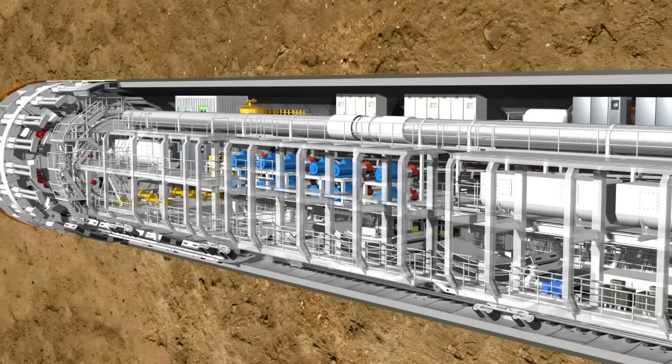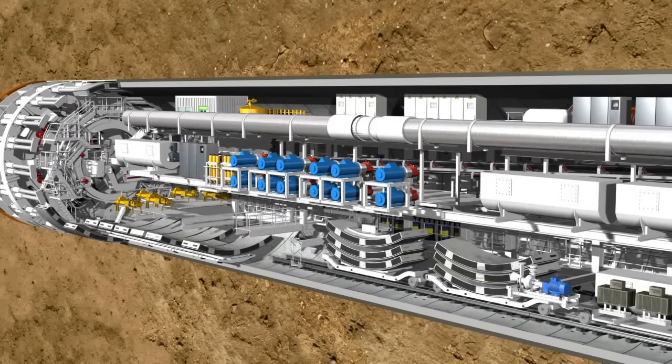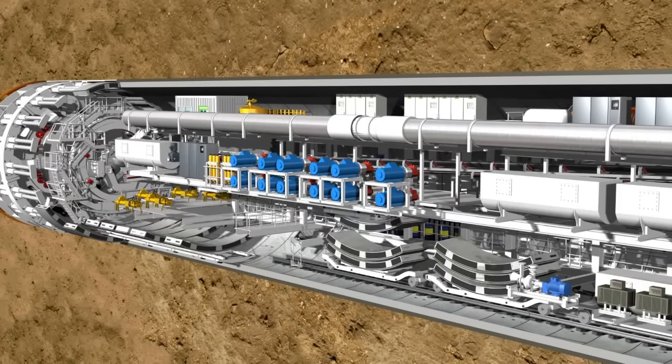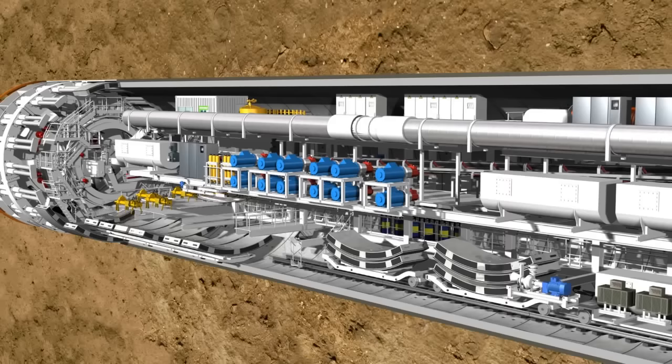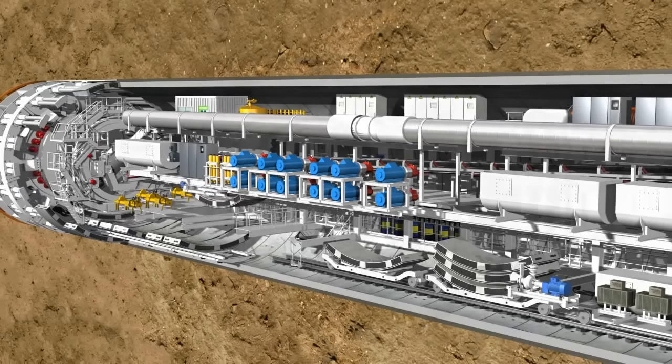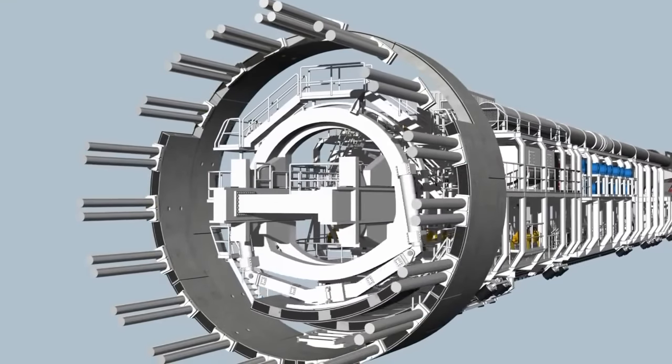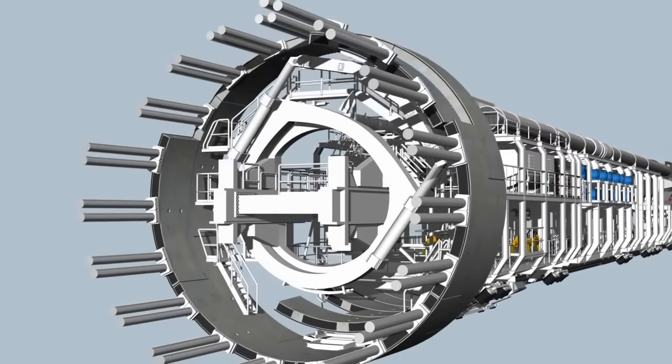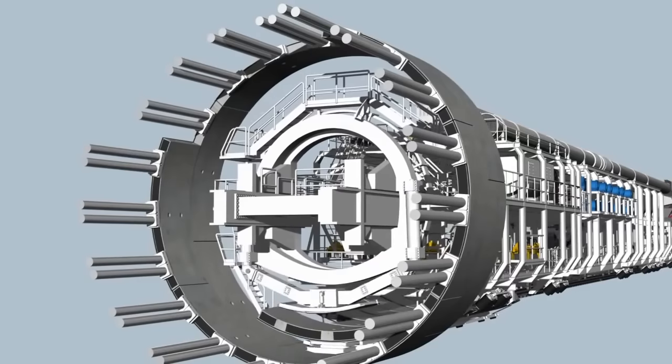In the front section of the backup, the lining segments are lifted individually by a special transfer crane. It lifts them onto the segment feeder which transports the elements to the front of the tunnel. Here, the heavy ring segments are picked up and positioned by a hydraulically controlled crane arm, called the erector, using vacuum plates.